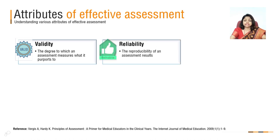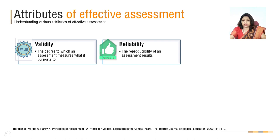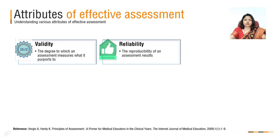Second is reliability, which relates to precision or reproducibility. For example, if you are getting various different responses from students for the same question, that means reliability is very low. The solution is to structure that question. Like, if I ask 'describe jaundice,' I will get various different answers. But if I make it structured — 'describe jaundice under the following heads: definition, causes, management, etc.' — I will get specific answers. This is how reliability can be increased.